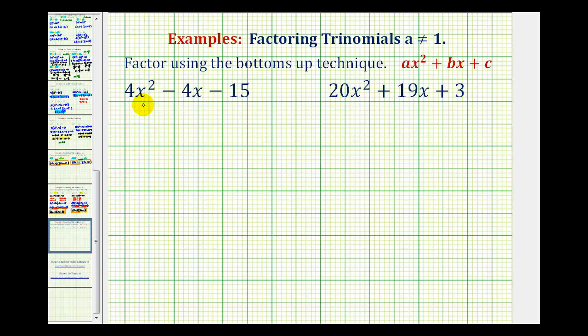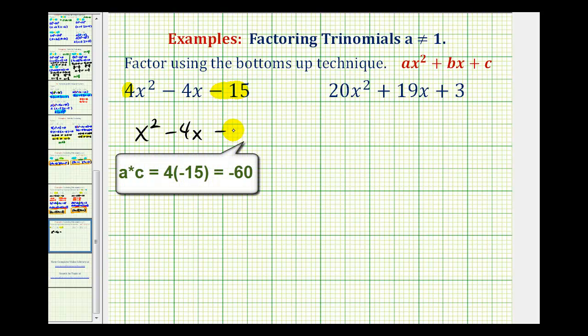To start the bottoms up method, we're going to rewrite this as a trinomial with a equal to one by replacing c with a times c. Since a times c is going to be four times negative fifteen, we're going to rewrite this as x squared minus four x minus sixty.